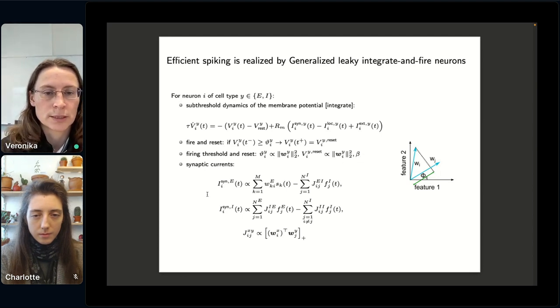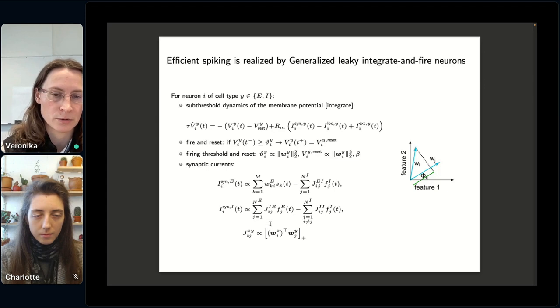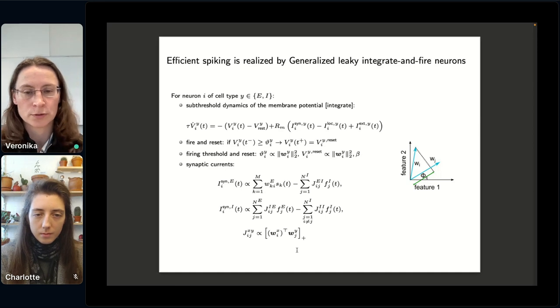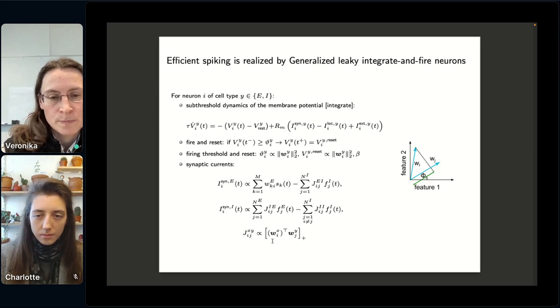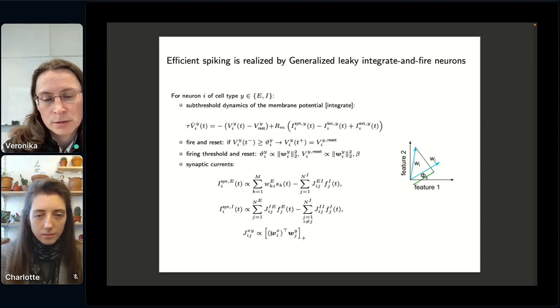So let's have a look at the synaptic currents. We find that synaptic currents are proportional, in case of excitatory neurons, they are proportional to a linear sum of features. And we also have a term with recurrent inhibition. And the synaptic currents in inhibitory neurons consist of recurrent excitation, recurrent inhibition. So a very important result of this model is that the synaptic connection between neurons i and j is proportional to the similarity of the selectivity vectors of the pre-synaptic and the post-synaptic neurons. So this simple rule will describe the strength of all synaptic connections. And this is what we call the structured connectivity.